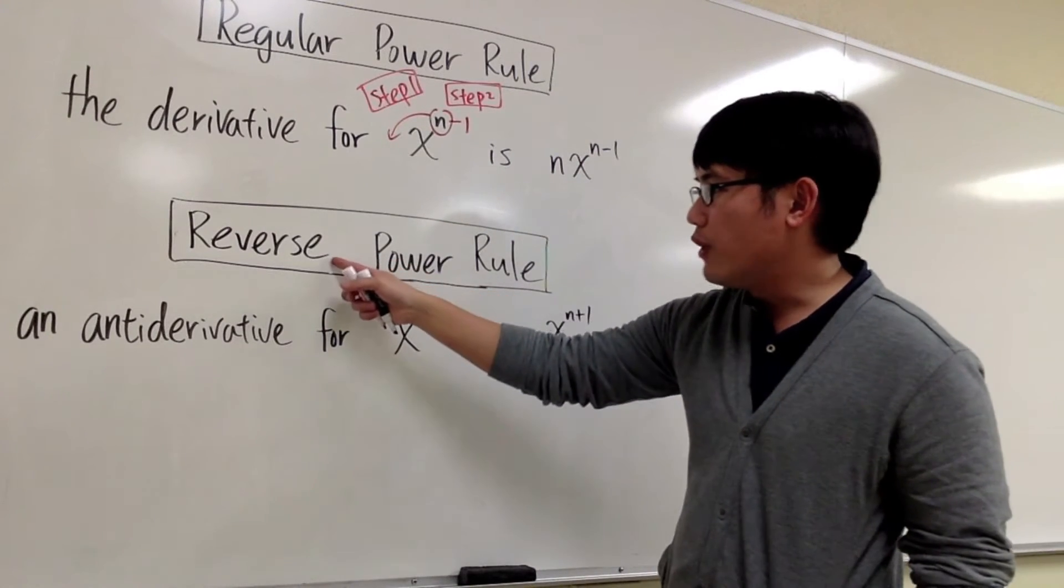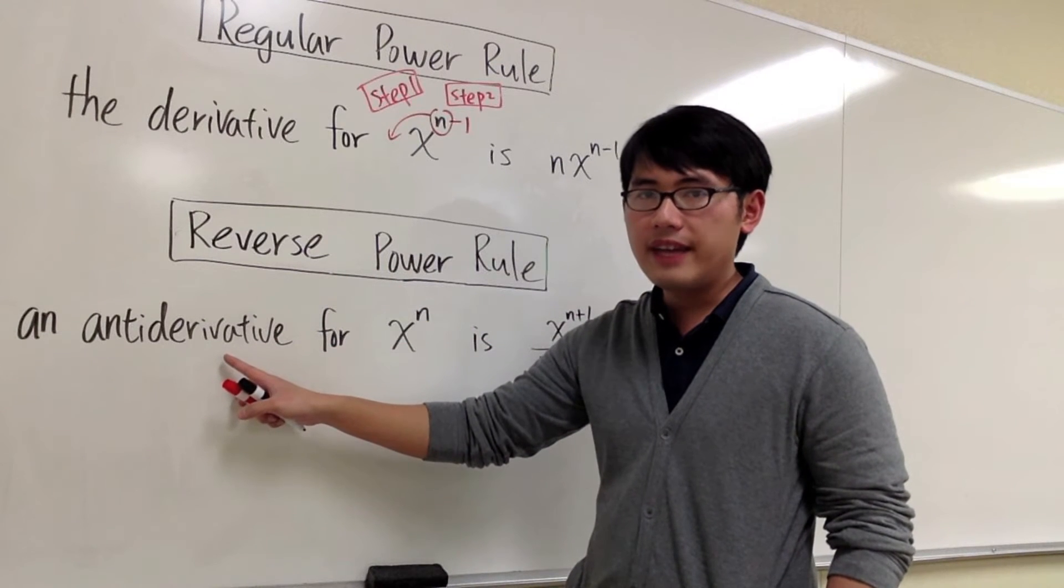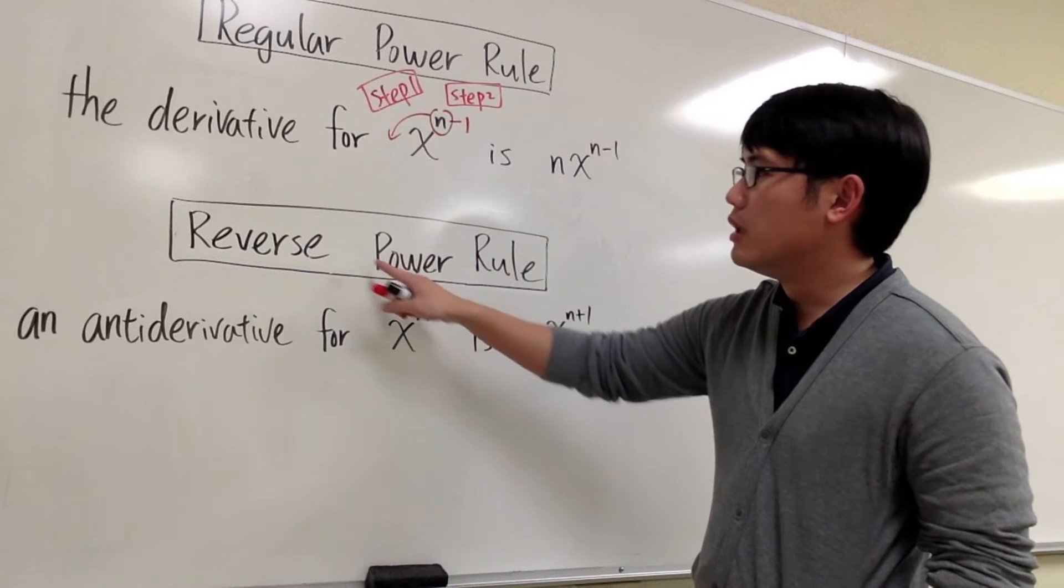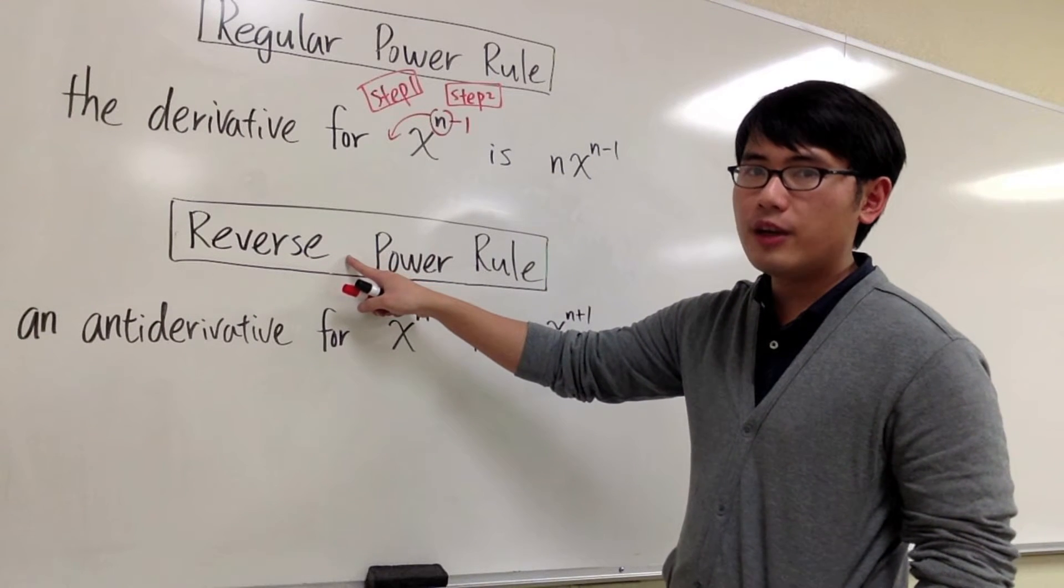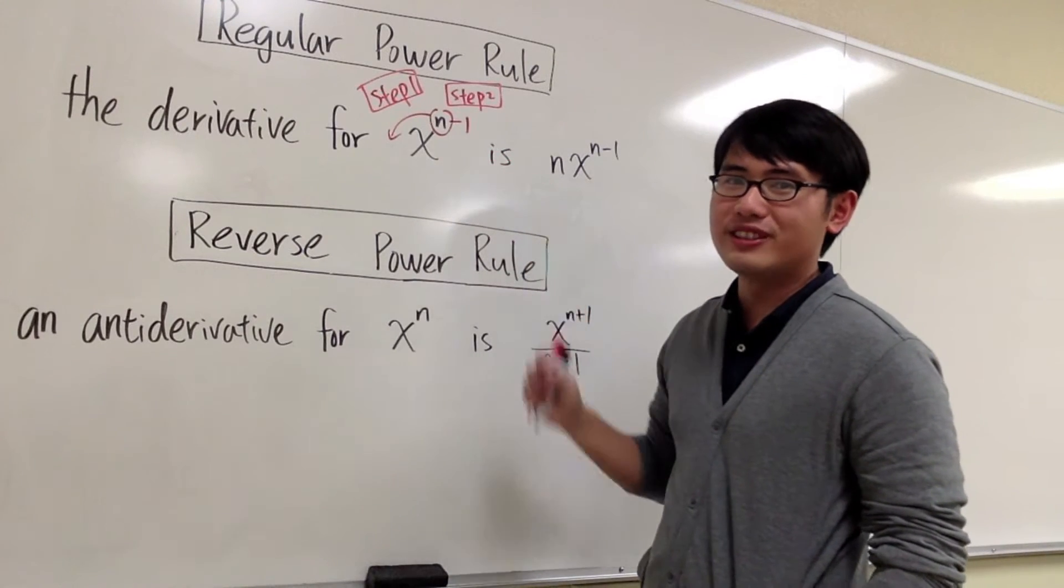For the reverse power rule, this is the situation when we want to find an anti-derivative for the function that's in the form of x to the n power. For the reverse power rule, we are not only going to reverse the steps from the regular power rule, but we also have to reverse the operations.